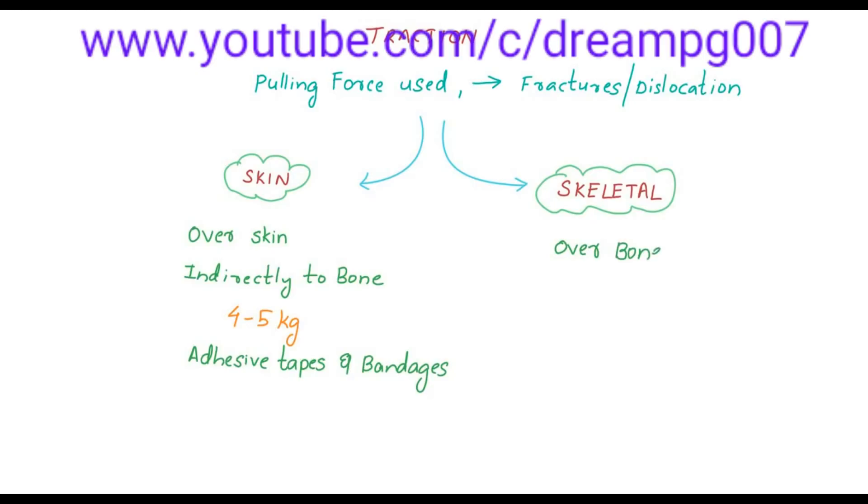Skeletal traction is directly applied over the bone, so the pulling force is directly over the bone. Here maximum 20 kg is used. Pins, screws, wires, and tongs are used for giving skeletal traction. Skin traction is used for shorter duration, whereas if we need traction for a longer duration, skeletal traction is the best option.